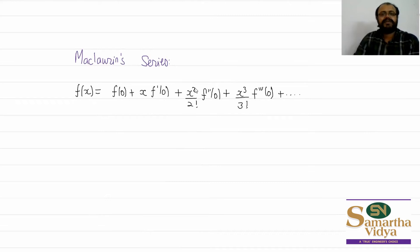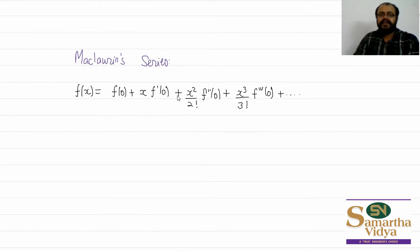That is, if we have a square term it is 2 factorial; if it is a cubic term it is 3 factorial; if it is raised to 4 it is 4 factorial — multiplied by the corresponding derivative of the function evaluated at x = 0. Using this basic definition, we can represent any function in terms of increasing powers of x.